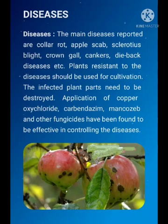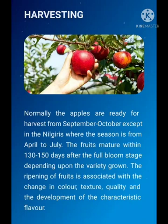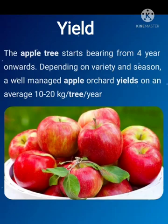Harvesting. Normally, the apples are ready for harvest from September to October, except in the Nilgiris, where the season is from April to July. The fruit matures within 130 to 150 days after the full bloom stage, depending upon the variety. The ripening of the fruit is associated with the change in color and texture. Yield. The apple tree starts bearing from 4 years onwards. Depending on the variety and season, a well-managed apple orchard yields on an average 10 to 20 kg per tree per year.